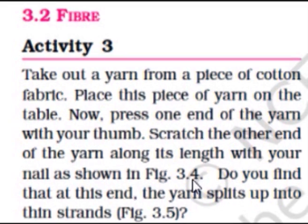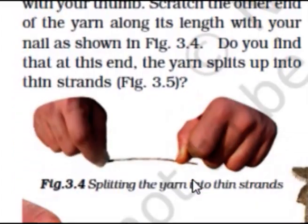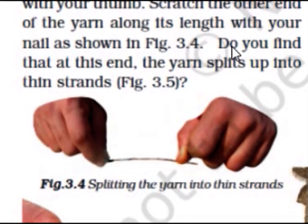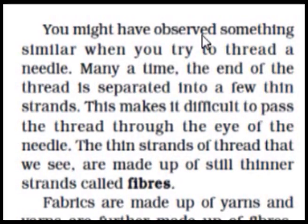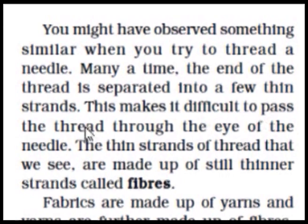Activity 3: Take out a yarn from a piece of cotton fabric. Place this piece of yarn on the table. Now press one end of the yarn with your thumb and scratch the other end along its length with your nail. You will see that the yarn splits up into thin strands at the end. This is similar to what happens when you try to thread a needle - the end of the thread separates into thin strands, making it difficult to pass through the eye of the needle.